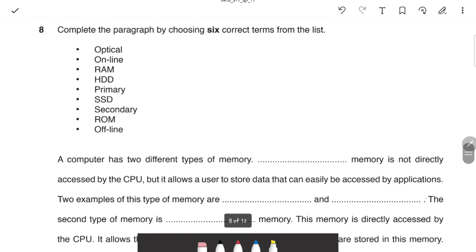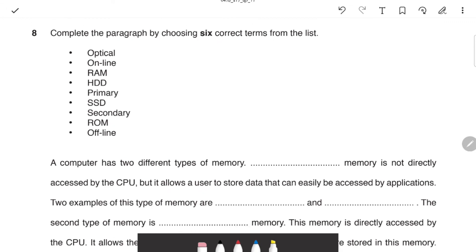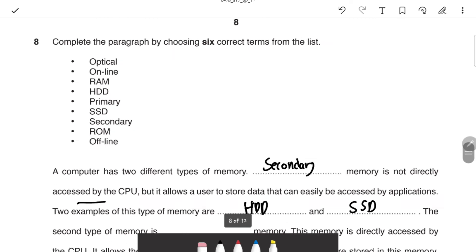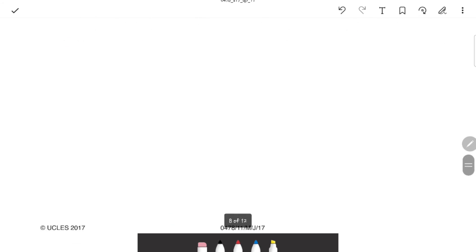Next is completing a paragraph by choosing six correct terms. A computer has two types of memory. Secondary memory is not directly accessed by the CPU, but allows users to store data accessed by applications — two examples are HDD and SSD. The second type is primary memory, accessed by the CPU, allowing the processor to access data and instructions — this is stored in RAM or ROM.